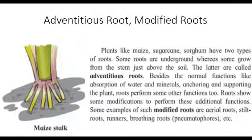Plants like maize, sugarcane, and sorghum have two types of roots — some are underground while some grow from the stem just above the soil. The latter are called adventitious roots. Besides the normal functions of absorption of water and minerals, anchoring and supporting the plant, roots perform some other functions too.